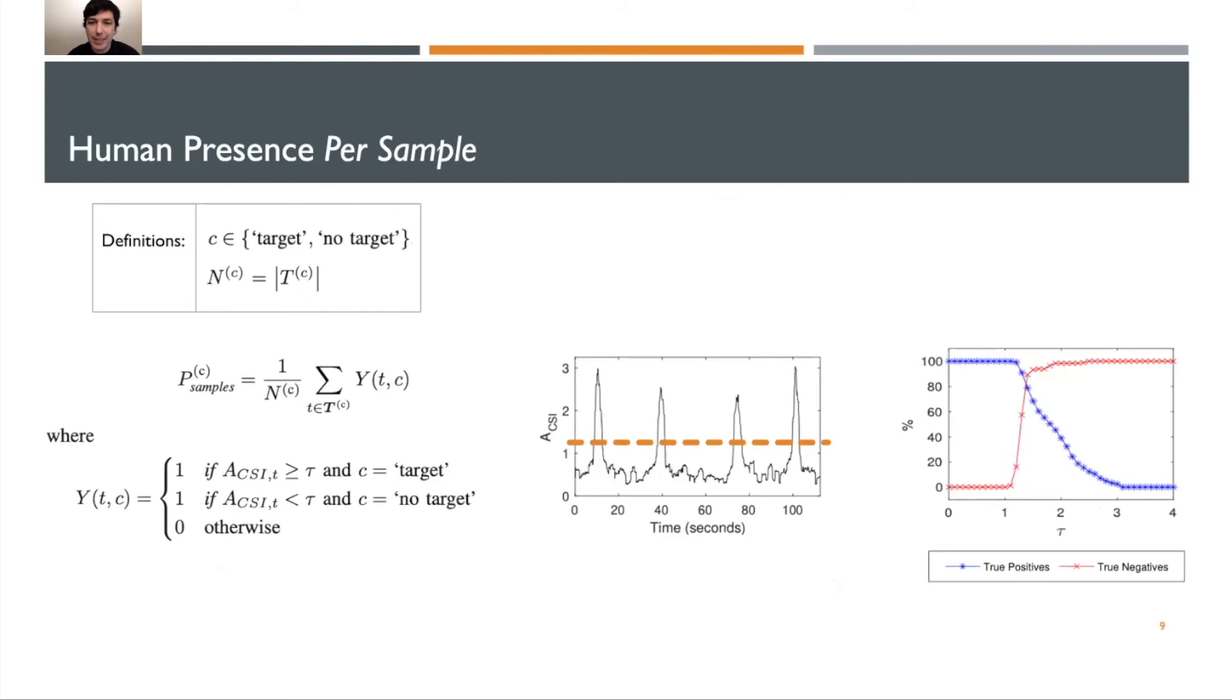Now that we see these distinct peaks, we want to formalize a method for recognizing human presence. We'll start with some definitions. C is the class for a given sample that we record. Each sample can either be marked as having a target present or no target present. Next, we have NC, and that's just the number of samples that we've collected in total of that given class.